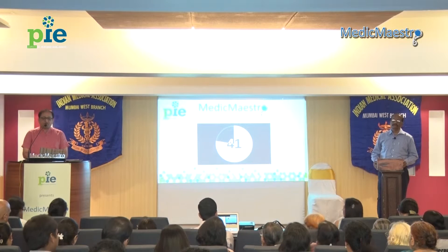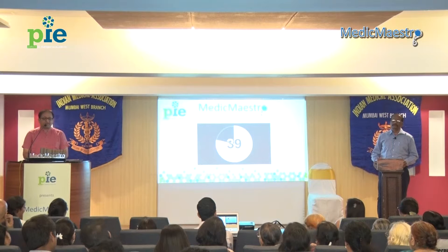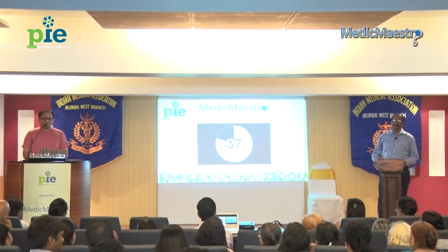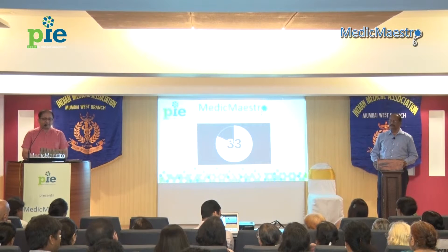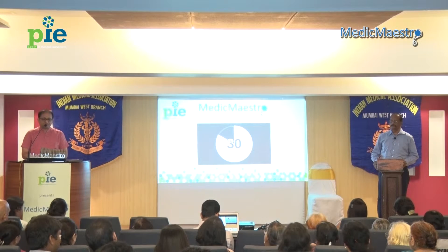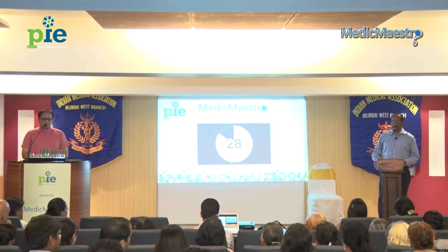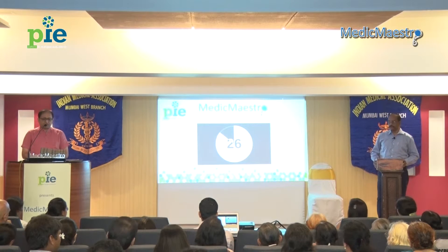The Mackler triad of vomiting, chest pain, and subcutaneous emphysema is a feature of which esophageal disease? Rupture of the esophagus. Correct.